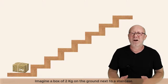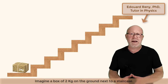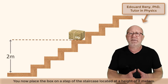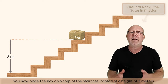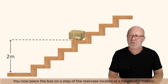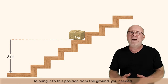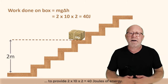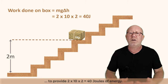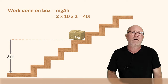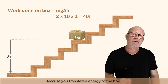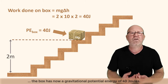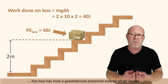Imagine a box of 2kg on the ground next to a staircase. You now place the box on a step of the staircase located at a height of 2 meters. To bring it to this position from the ground, you needed to provide 2×10×2 = 40 joules of energy. Because you transferred energy to the box, the box now has a gravitational potential energy of 40 joules.